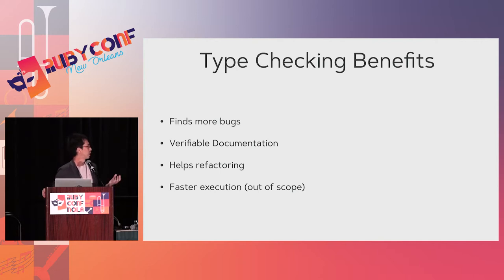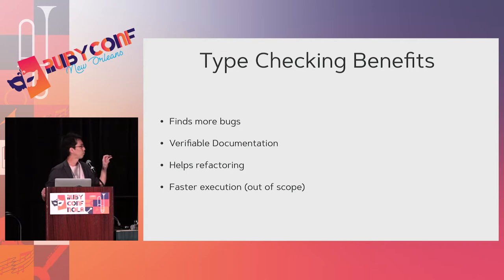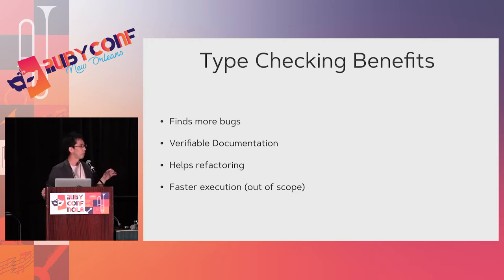It helps you find more bugs in your program. Another aspect is verifiable documentation. When you are writing libraries or application code, you see a lot of documentation — class documentation and method documentation — telling you which methods are available and how to pass arguments. These are usually written in natural language like English or Japanese, so you can read and understand, but the computer cannot. With types as verifiable documentation, a type checking tool can verify that instead of you.